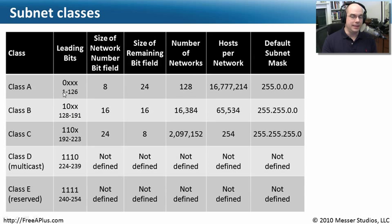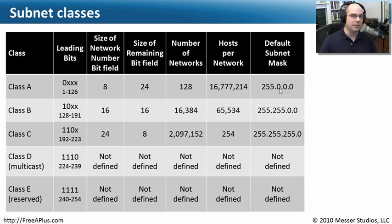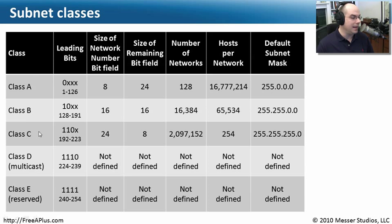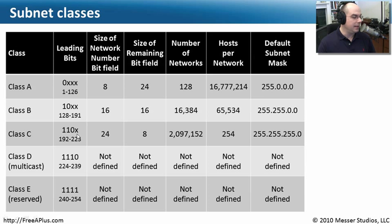We also defined that if the first number in your IP address is between 1 and 126, that's a class-A network using the class-A default subnet mask. If the first number is between 128 and 191, that's a class-B network. If the first number is 192 to 223, it's class-C. You've also got class-D, which is multicast, and class-E, which was reserved and never really used. You'll most often see class-A, class-B, and class-C. For the purposes of your A+ certification, you will want to memorize those leading numbers: 1 to 126 is class-A, 128 to 191 is class-B, and 192 to 223 is class-C.